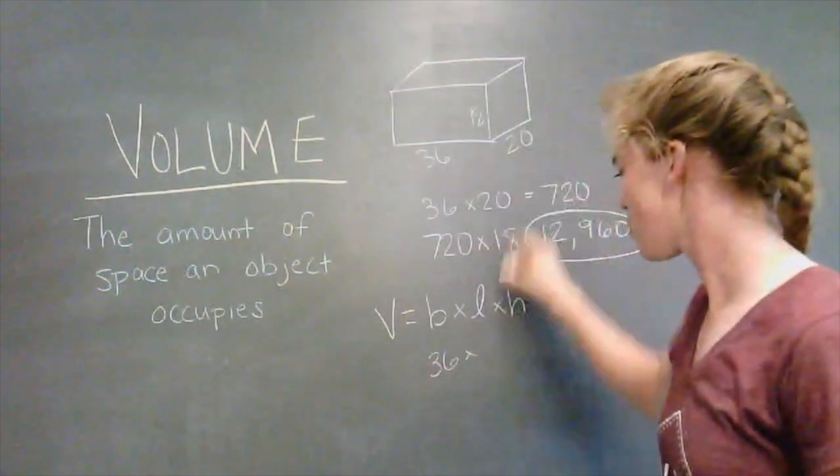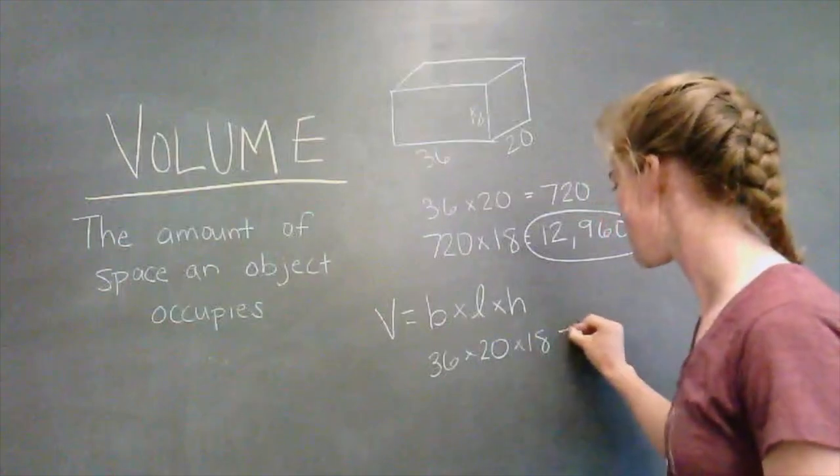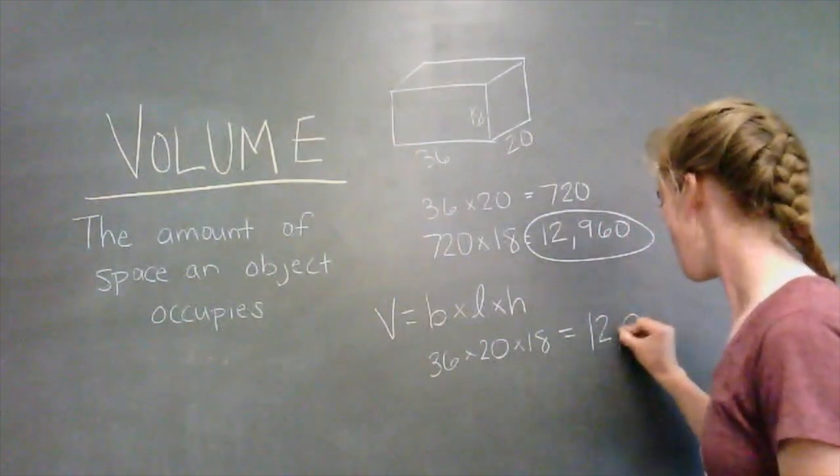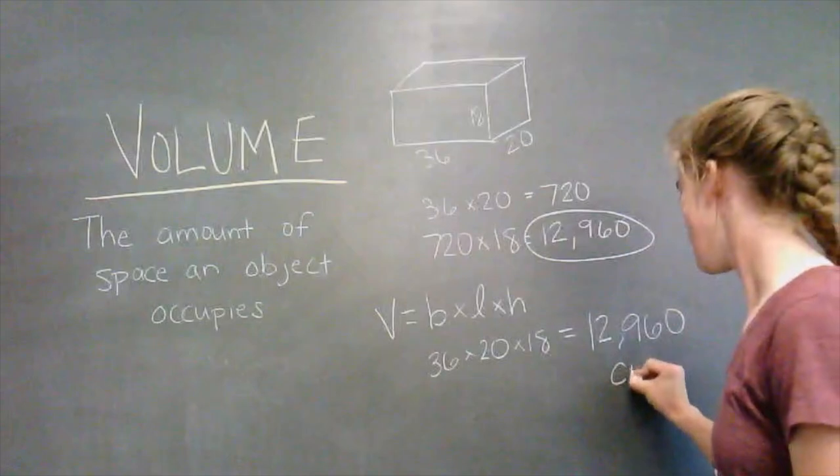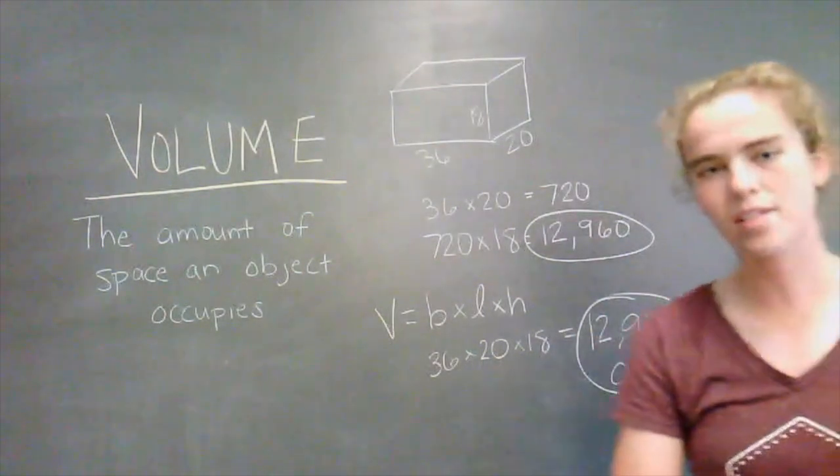And when we multiply those all together, we still get 12,960, and our units would be centimeters cubed, since we were measuring them in cubic centimeters.